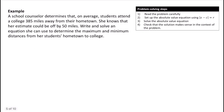A school counselor determines that on average, students attend a college 385 miles away from their hometown. She knows that her estimate could be off by 50 miles. Write and solve an equation to determine the maximum and minimum distances from a student's hometown to college. We have a central value and a range, so we model this using the absolute value of X minus C equals R.